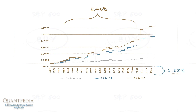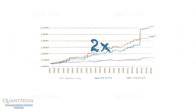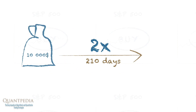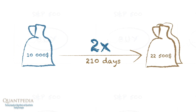In the analyzed period from 1950 to 2018, the initial amount that we could invest at the beginning more than doubled. From US$10,000 invested in this strategy, we will end up after 210 days of record of this anomaly with more than US$22,500. So, the pre-election drift strategy is definitely a significantly profitable effect.